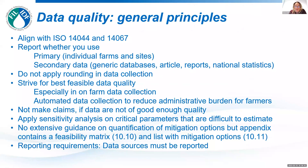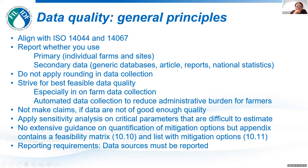First about data quality — the general rules of the game. What is important is that general rules with regard to how to assure data quality are listed in ISO 14044 and 14067, which we ask you to keep in mind when you do the LCA. When you're reporting carbon footprint of dairy, you have to be clear about whether you're using primary or secondary data. Primary data would be individual farm data or site data, whereas secondary data is more generic databases, articles, reports, national statistics. We ask you not to apply any rounding when you're collecting the data — you do that at the end of the study when you have your final footprint, but not in between because you just lose a lot of accuracy.